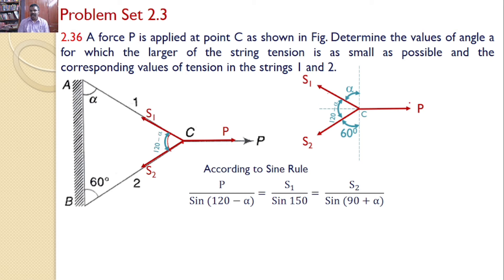Is equal to S1 divided by the angle between P and S2. We know that this angle is 90 degrees and this is 60 degrees. Hence the angle between P and S2 becomes 90 plus 60. Hence I can write the equation S1 divided by sine 150. Similarly S2 divided by angle between S1 and P. This angle is given as alpha and this is 90 degrees. Hence the angle between P and S1 is 90 plus alpha. So I can write this equation is S2 divided by sine 90 plus alpha.